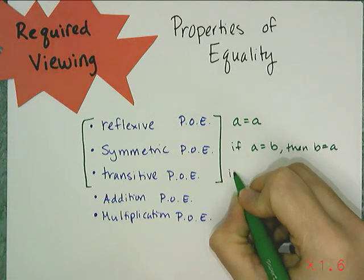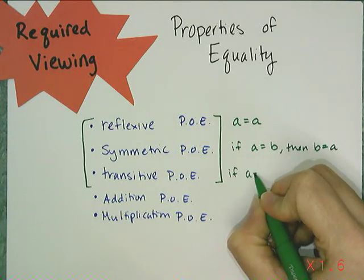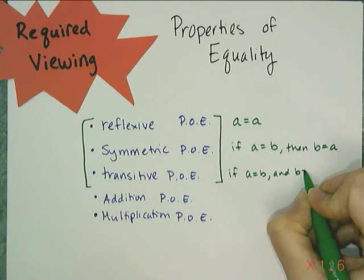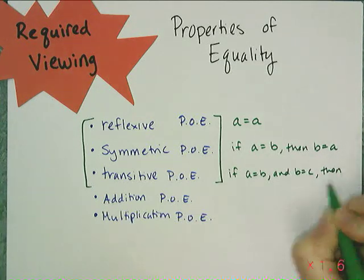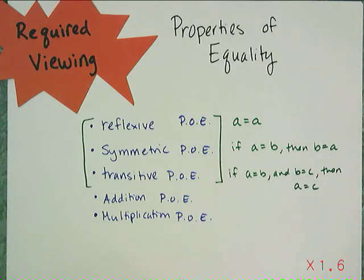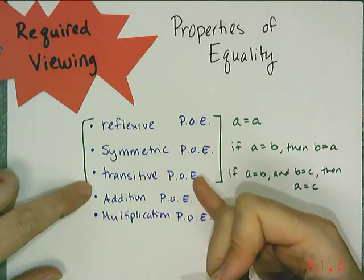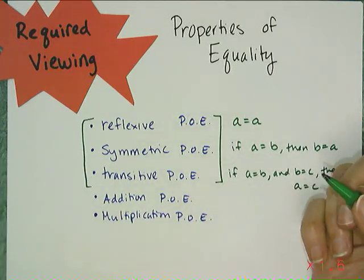And we don't use transitive very much at all. It says if A equals B, and B equals C, then A equals C. So we don't use this very much in Algebra 1. You use this a lot in geometry, but not so much in Algebra 1.